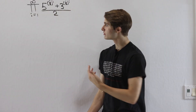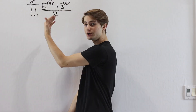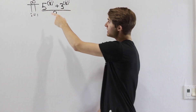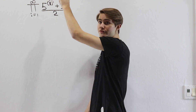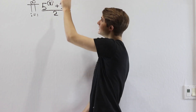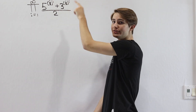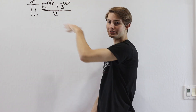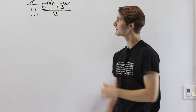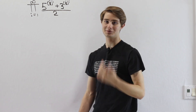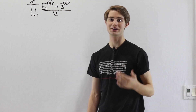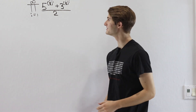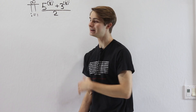We are going to find the product from i equals 1 to infinity of 5 to the 1 half to the i, plus 3 to the 1 half to the i, divided by 2. This is going to be a really awesome one to evaluate, so make sure you stick around to see the whole solution.